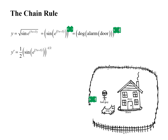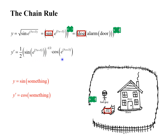Now what we want to do is take care of the dog. The dog is the sine of something, so we're going to take the derivative of sine of something. The derivative of sine is the cosine. So y prime equals cosine of something, and we multiply that result — cosine of something — onto what we had. This is the chain rule. We have just taken care of the dog, so we cross it out.